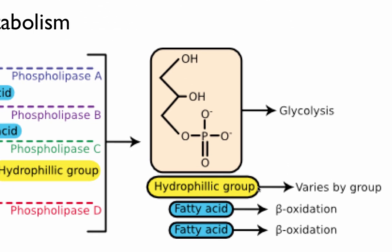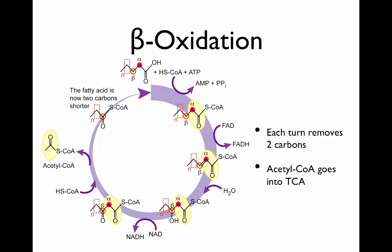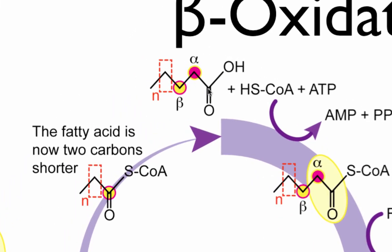The hydrophilic group is degraded in various ways we won't go into. The glycerol backbone is plugged into glycolysis at the three-carbon phase and converted into pyruvate, and the fatty acids are degraded by something called beta-oxidation. In beta-oxidation, you have the alpha-carbon next to the carbonyl group and the beta-carbon, and in beta-oxidation, this beta-carbon is oxidized.